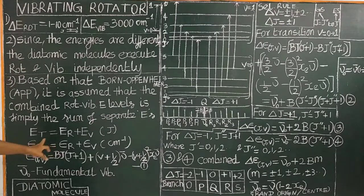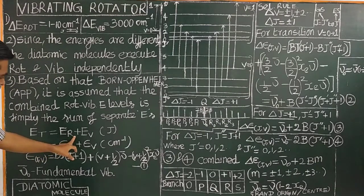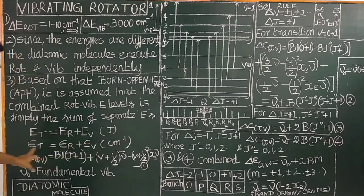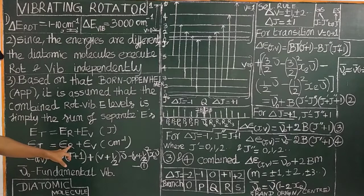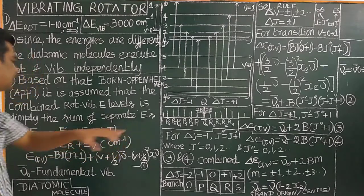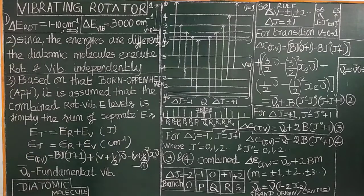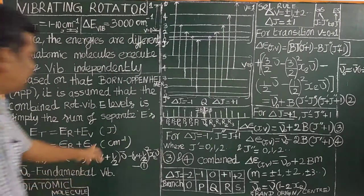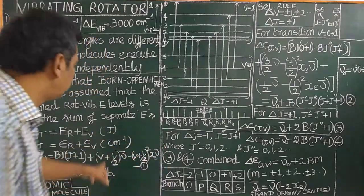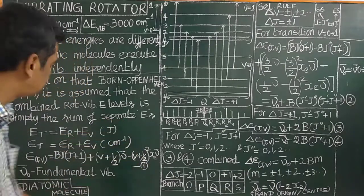The total energy is equal to the sum of rotational energy plus vibrational energy — in joules, small E equals epsilon-r plus epsilon-v. In spectroscopy it is expressed in wave number, not in joules.